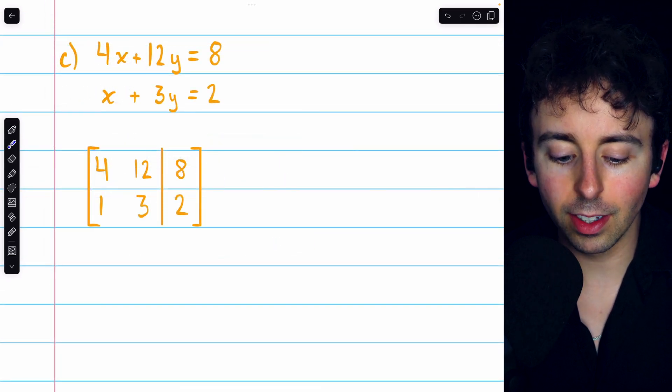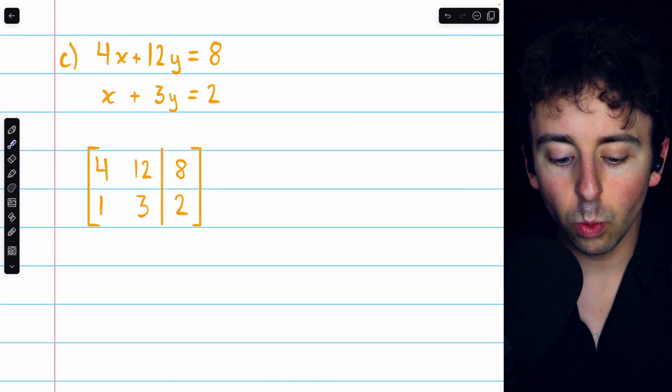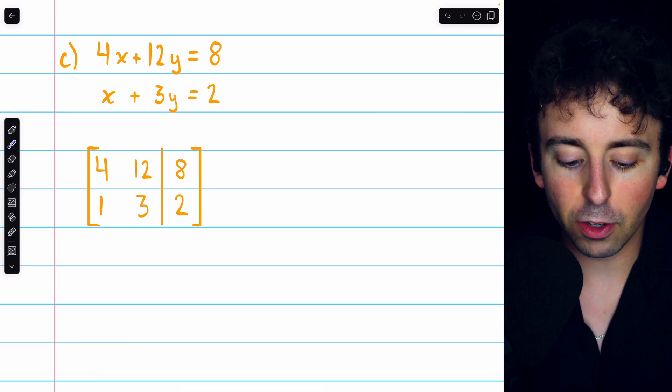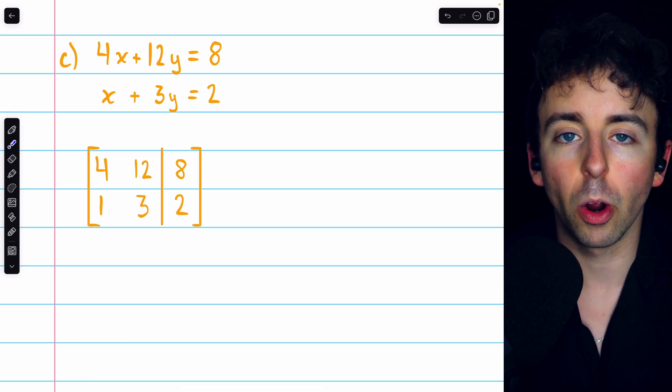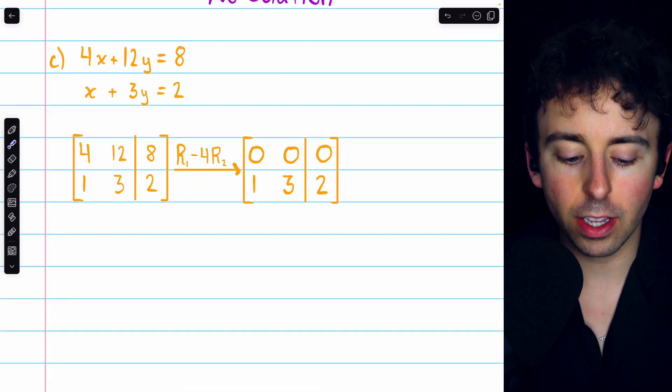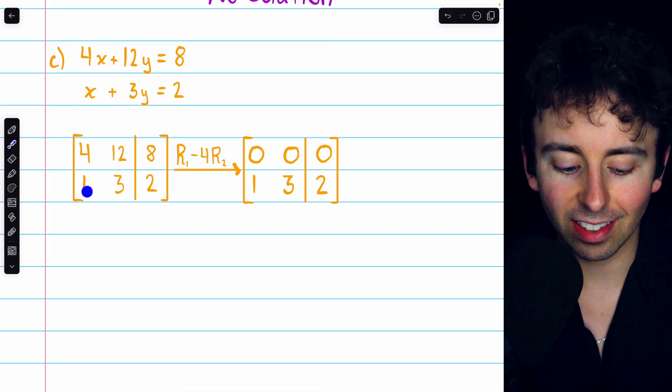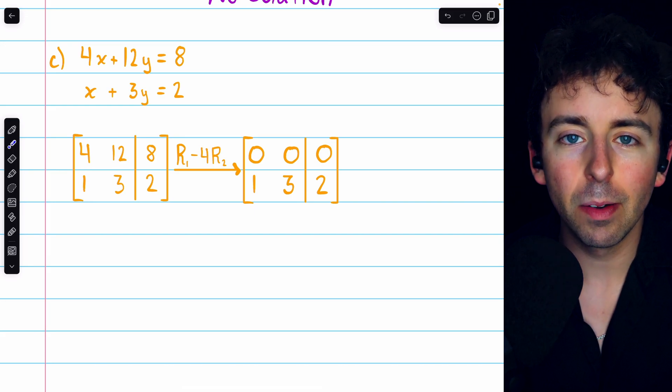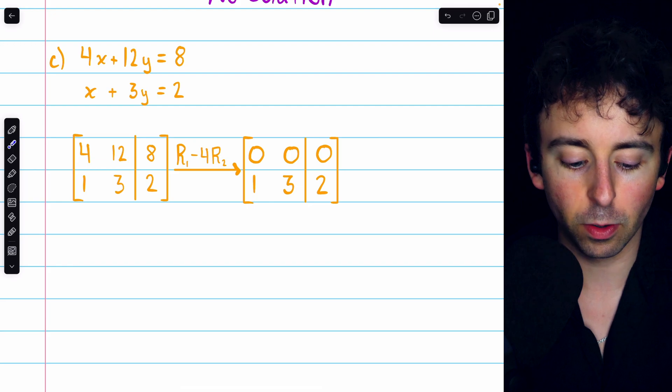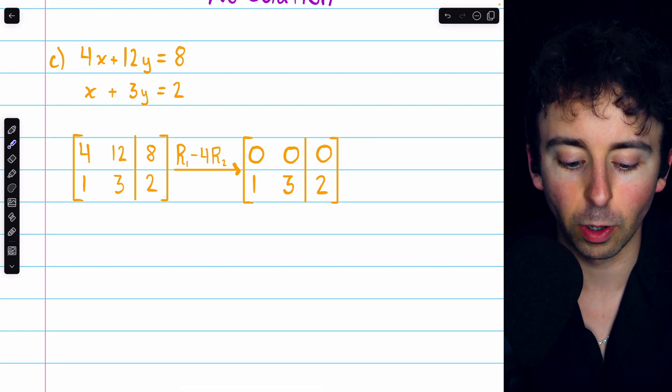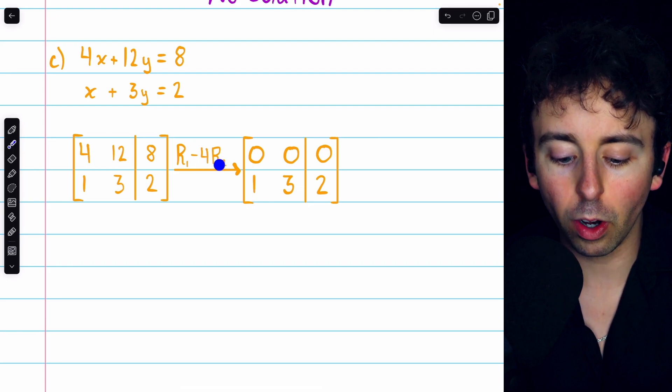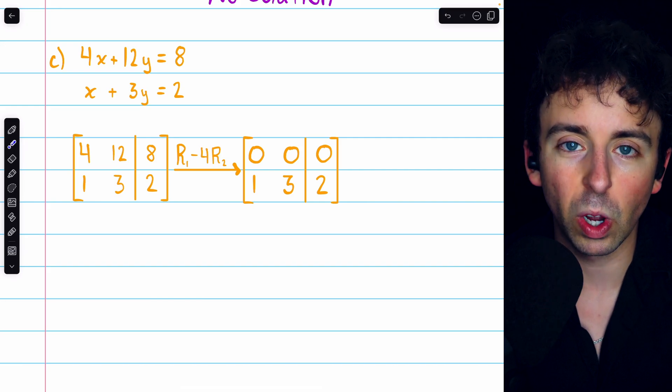Now, here is our final example. This is our system. We immediately write it as an augmented matrix, and then we'll begin to perform row operations. Again, we could try to use row 1 to eliminate this leading one in row 2, but that would require some fractions, so it's probably easier to just turn the 4 into a 0 by subtracting four copies of row 2 from row 1.